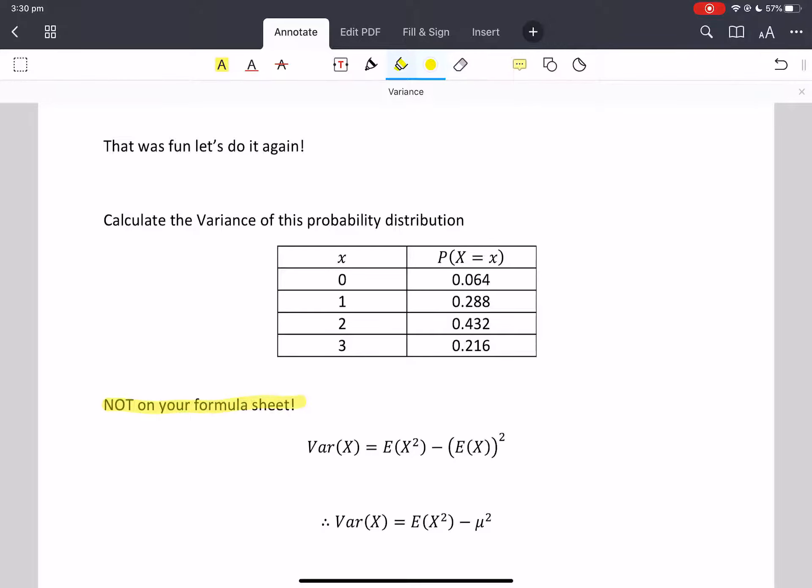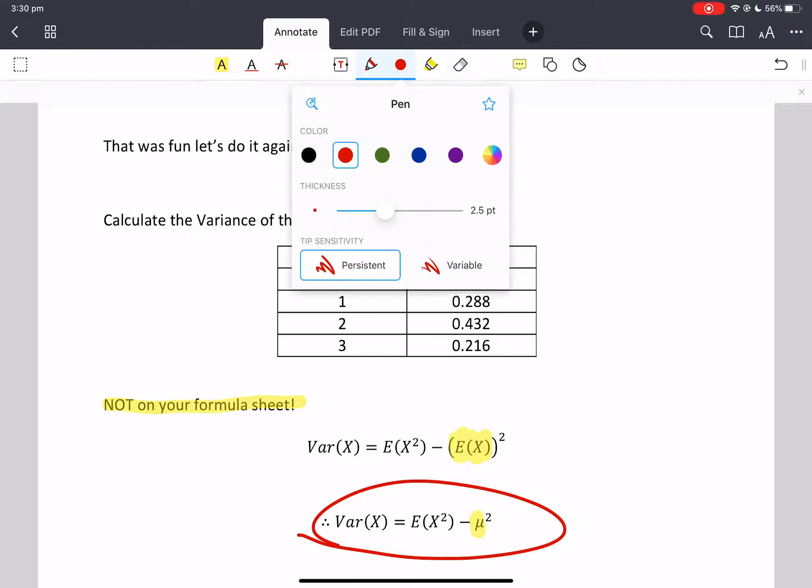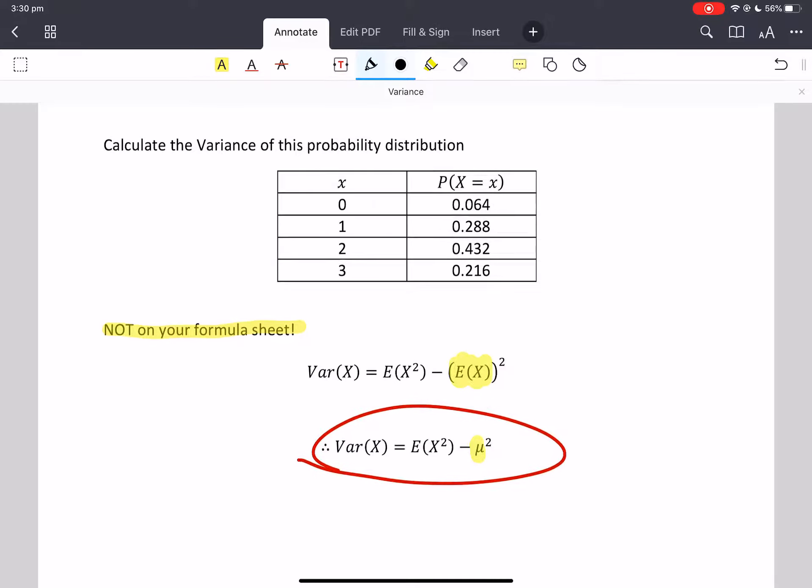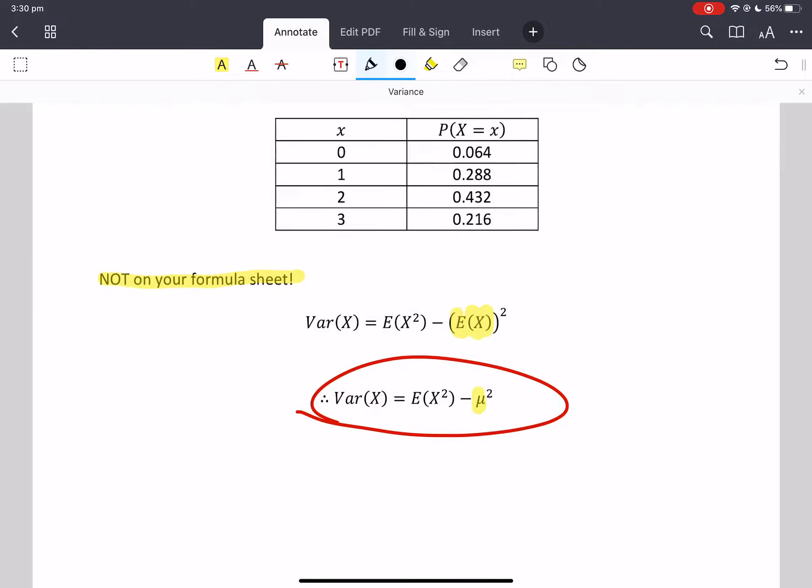These ones are not on your formula sheet. So, we recognize that the expected value of x is actually mu. So both of those formulas are exactly the same. You need to see them the same. This one just looks a little bit nicer on the eye. So, what we would, if we started from scratch again, we're going to go, hey, we don't know mu. So let's get our mu.